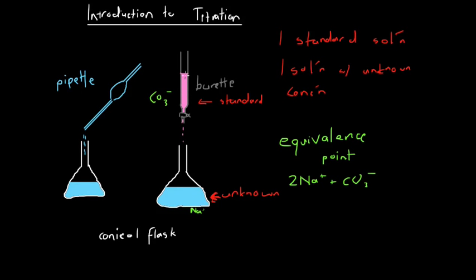Once we know when the equivalence point is reached, we can figure out using the burette — because the burette has measurements showing the volume that we've used — the change in volume of the burette, and therefore figure out the amount of standard solution that has been dropped into the unknown solution. So once we've reached the equivalence point, we know the exact volume of the standard solution that we've mixed, and we know the exact volume of the unknown solution that we've mixed.